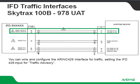You can wire and configure the ARINC 429 interface between the Skytrax 100B and the IFD using an ARINC 429 traffic advisory protocol. That's absolutely fine, but it's not necessarily our favorite way to do it — because if you use ARINC 429, you're not going to get full ADSB symbology, and you're also not going to get ADSB weather across that data stream.